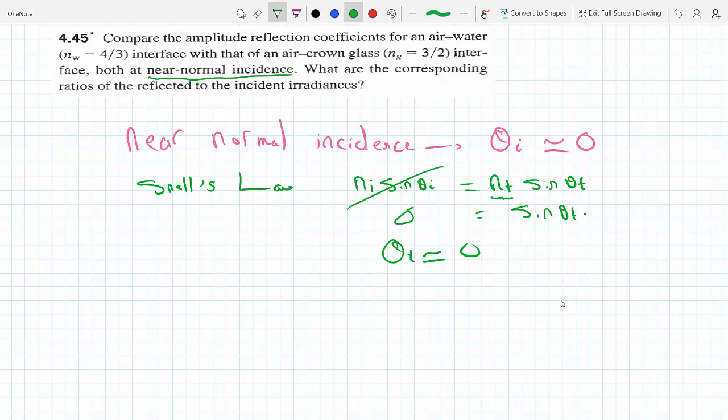So theta_i and theta_t are both zero. Now we go to Fresnel's equations for the amplitude coefficients. If we look at either one of them, they only differ by a minus sign at normal incidence.